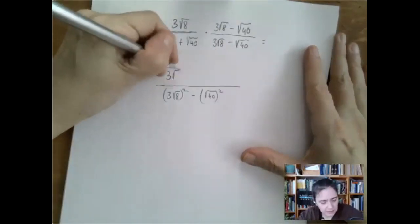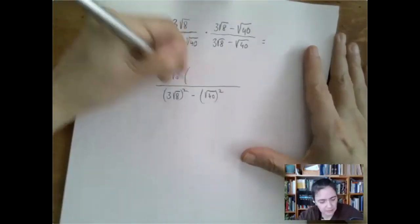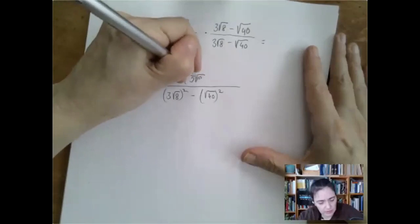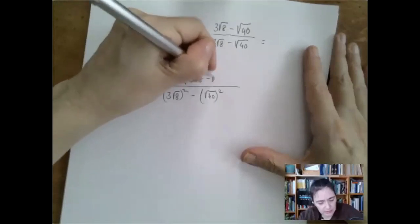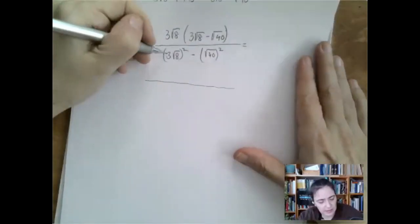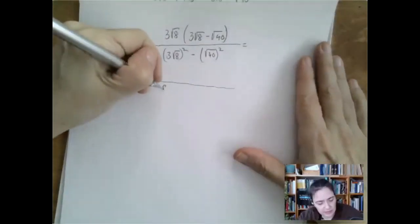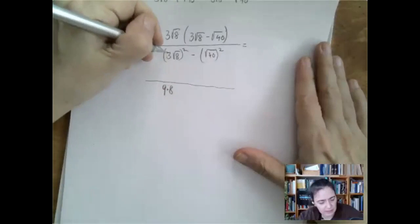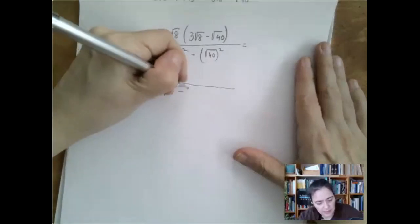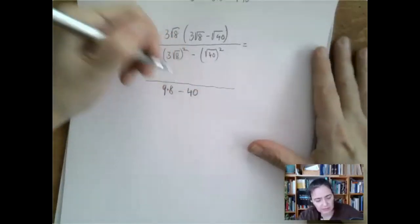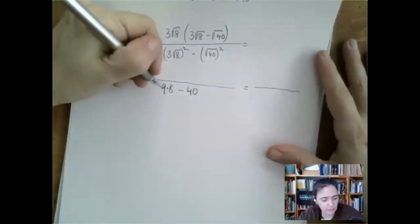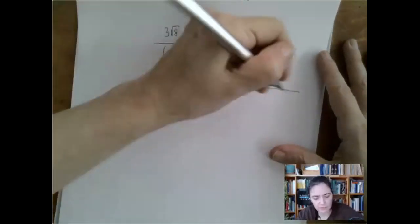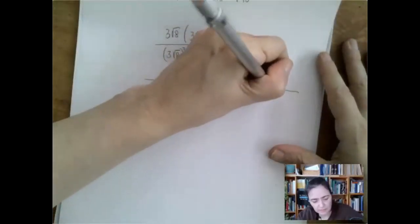We have a little bit of distribution to do in the numerator. The denominator is going to be 9 times 8 minus 40. 9 times 8 is 72, and 72 minus 40 is 32.